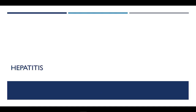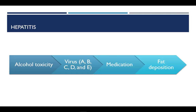The next condition of the liver is hepatitis, which is simply an inflammation of the liver. It can progress to scarring and cirrhosis. There are several potential causes of hepatitis including alcohol toxicity, a virus, medication, or fat accumulation as we just discussed with fatty liver.